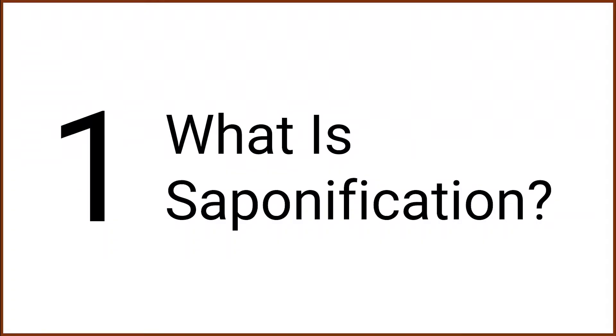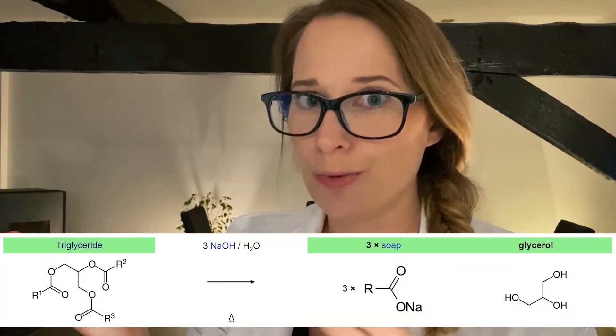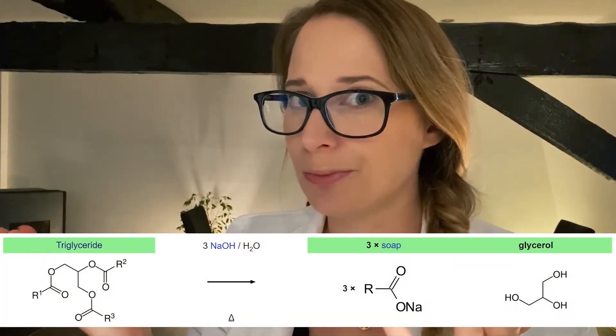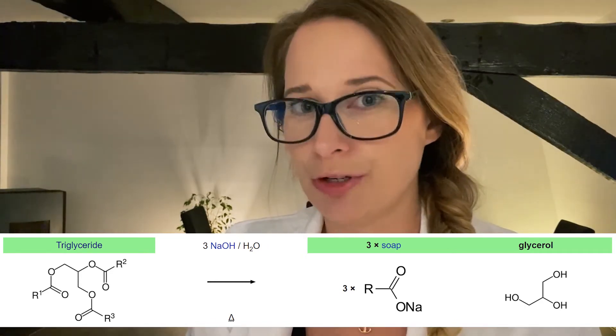What is saponification? For making soap you need two things: oil and lye. And when you mix these things together, you get another two things: soap and glycerol.